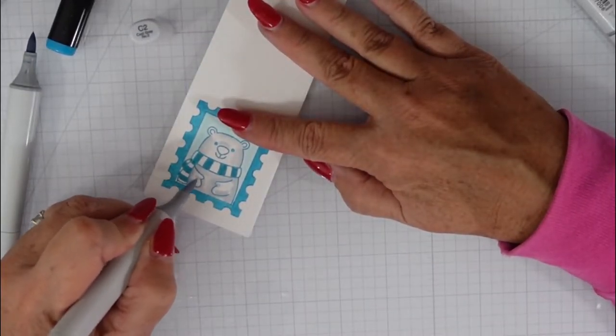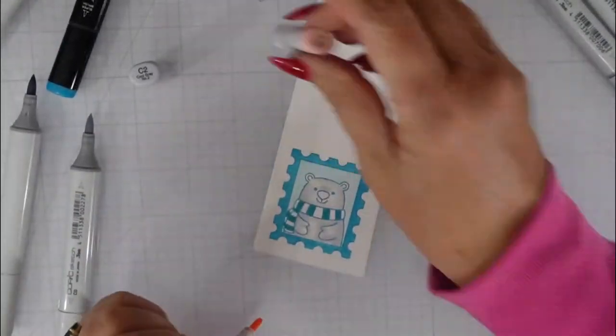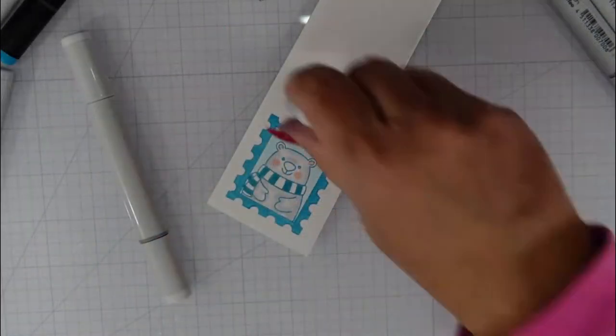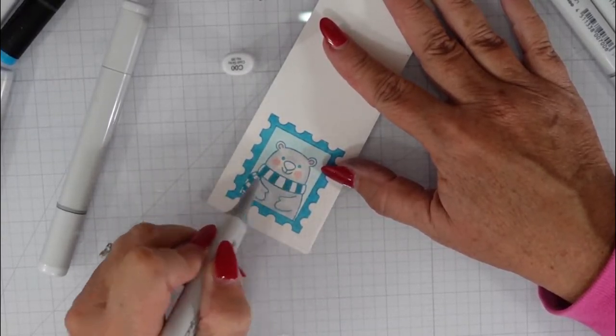So the bear is the only portion of this particular card that is not going to be monochromatic. So I colored him gray. Of course, I have to add a little bit of rosiness to his cheeks and to his ears.